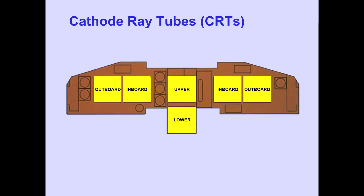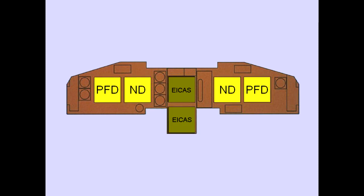There are six CRTs that display flight, navigation, and systems information. Normally the PFD is located outboard and the ND is located inboard. The location of a display can be changed to accommodate a CRT malfunction.